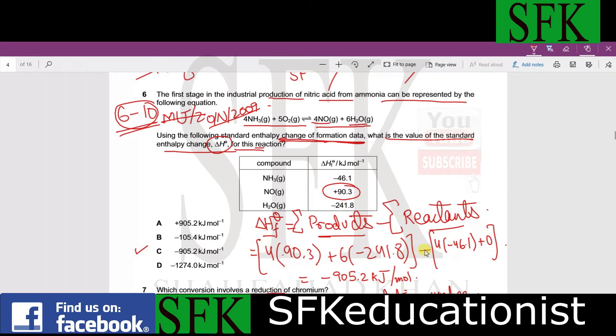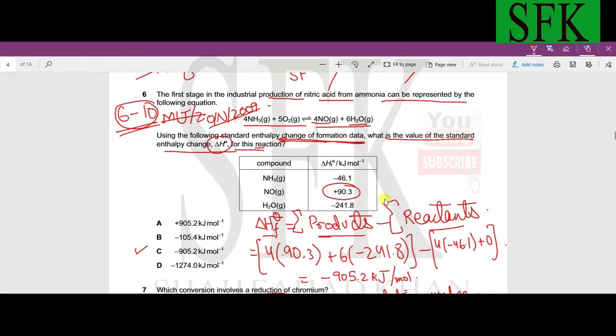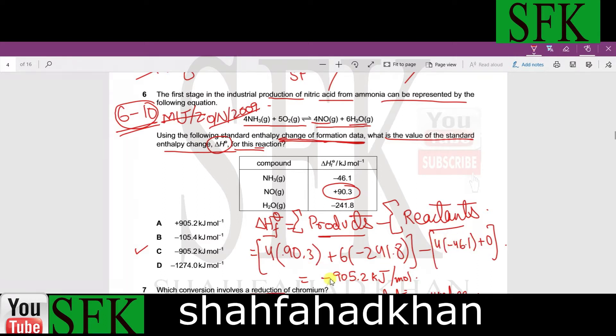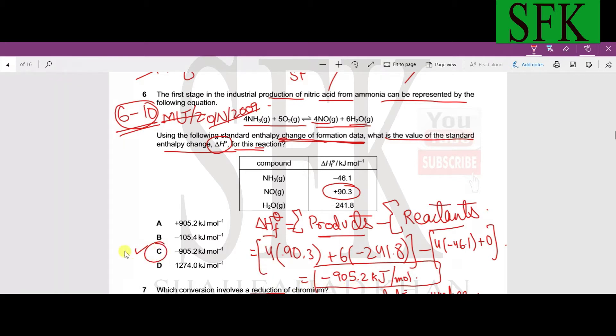We put them in brackets and subtract the enthalpy changes of reactants. Oxygen is an element so its enthalpy change of formation is going to be zero. What about ammonia? Just multiply the enthalpy change of formation of ammonia by four and then the answer that you get is minus 905.2 kilojoules per mole, so C is the correct option.